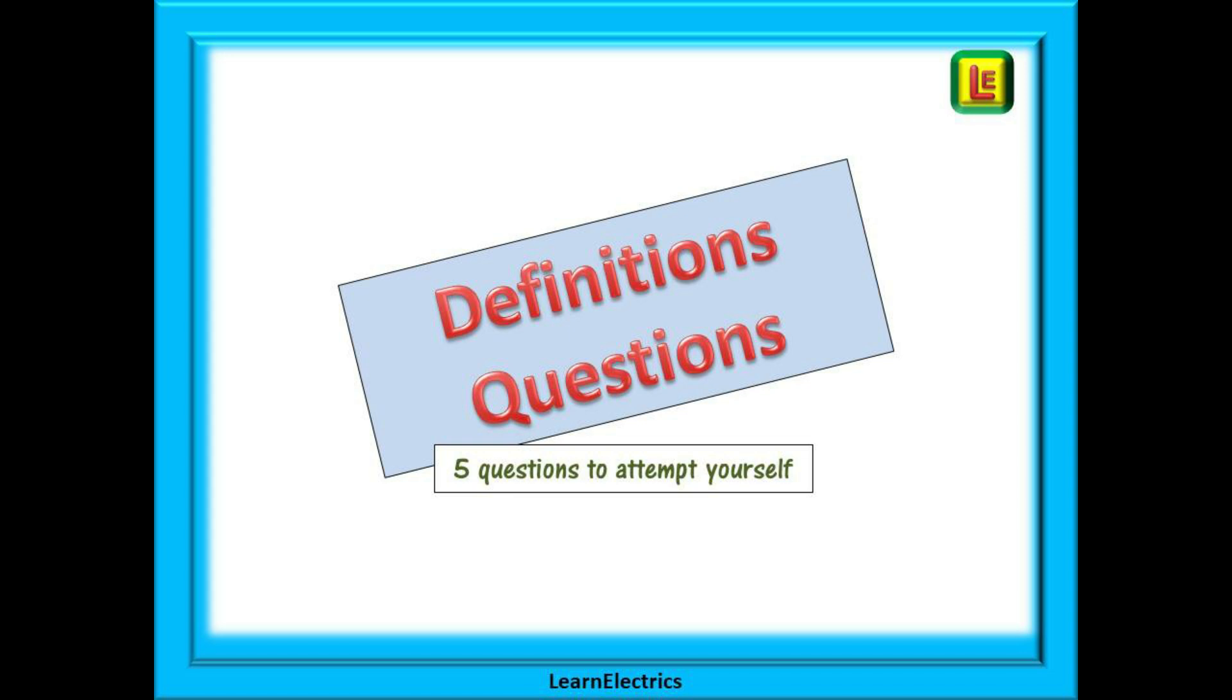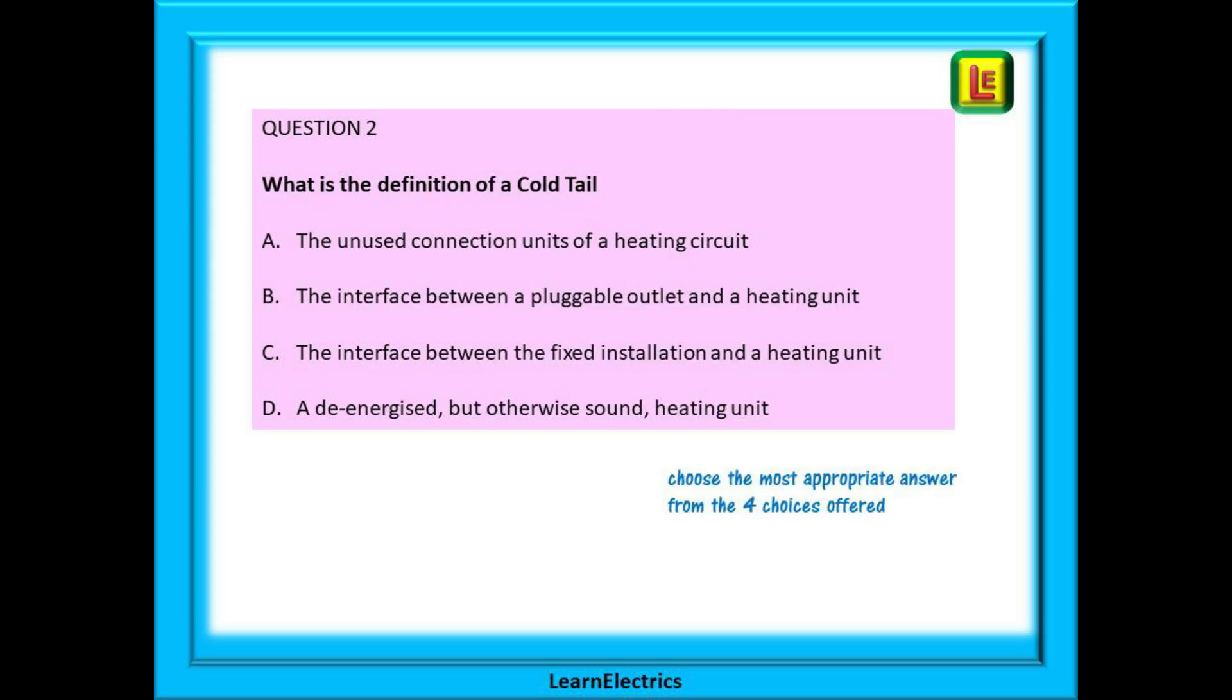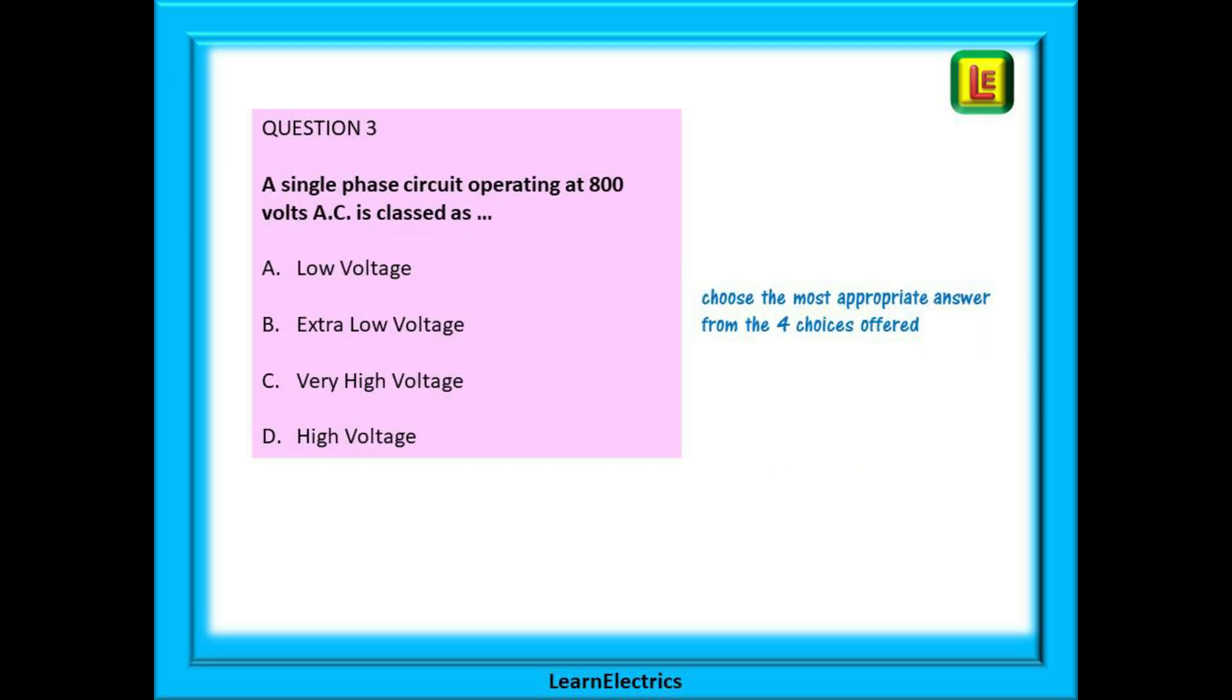And so to the questions for this video on definitions. And we have five questions for you this time. Question one is a description and we ask you to find the keyword and make your choice from the four answers offered. Now, question two will give you the keyword and we ask you to find the correct definition sentence. Question three is a tricky one on purpose. Take your time with this one. The correct answer may not be the first answer that you think of. Something like this is a typical exam question.